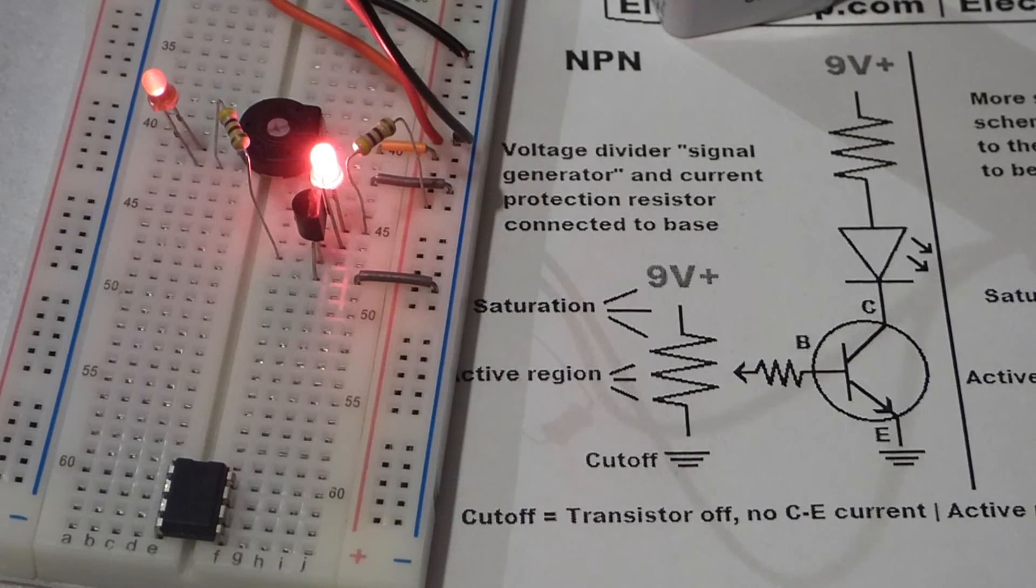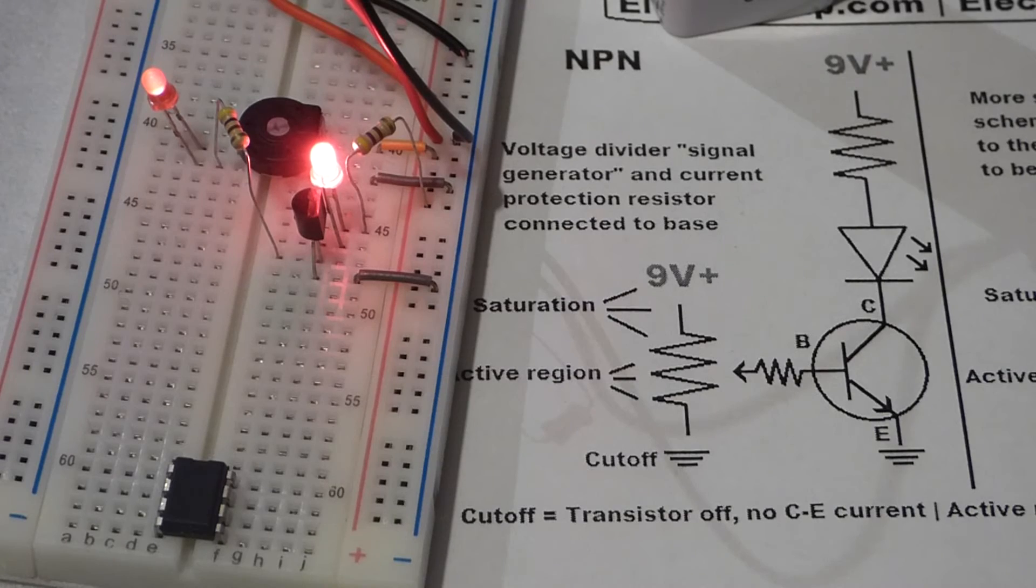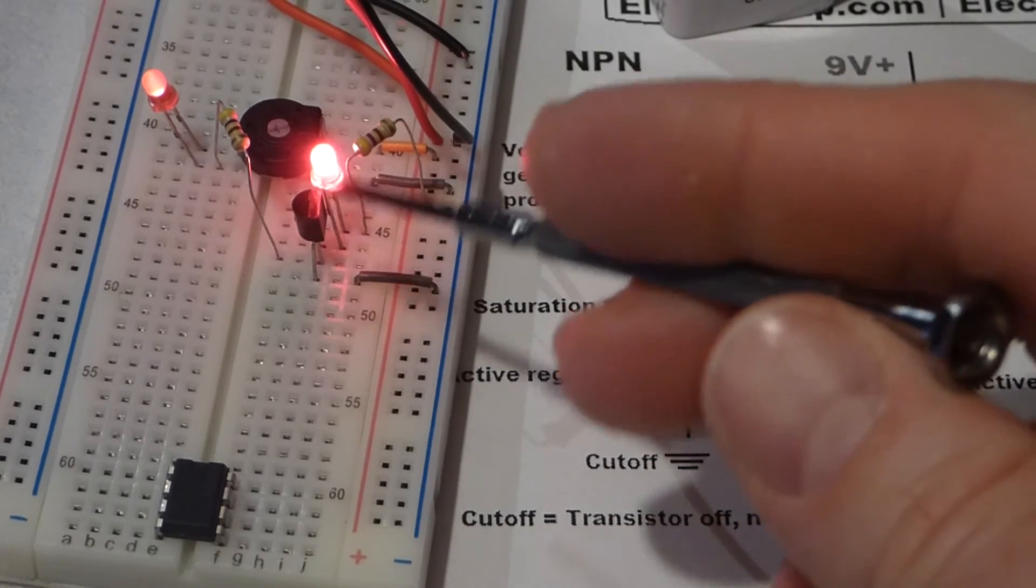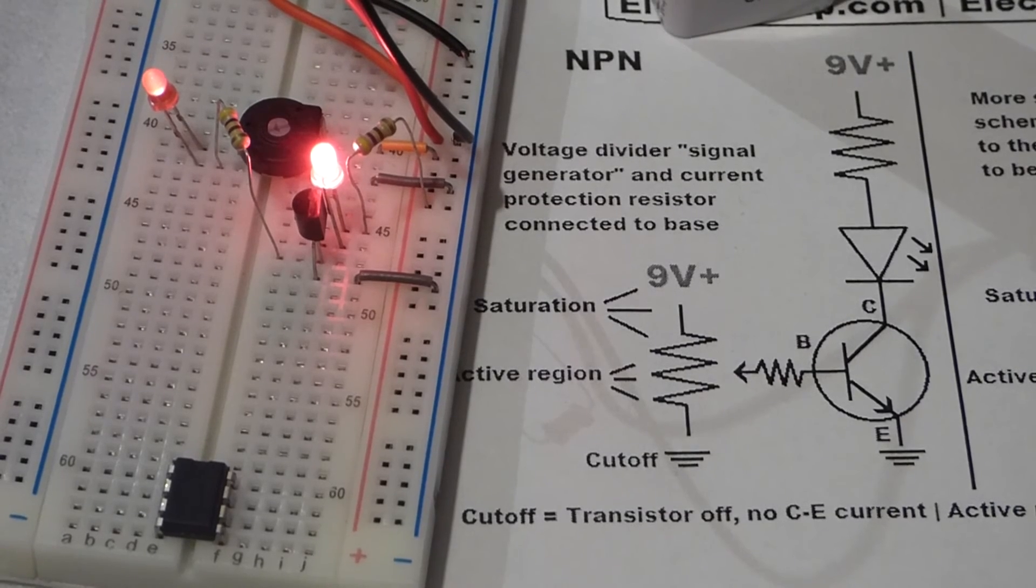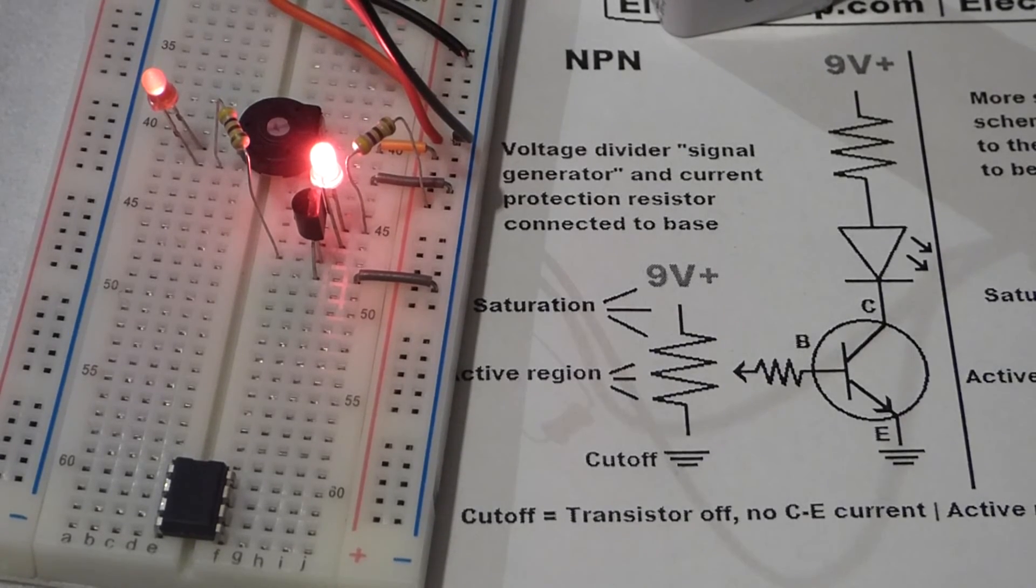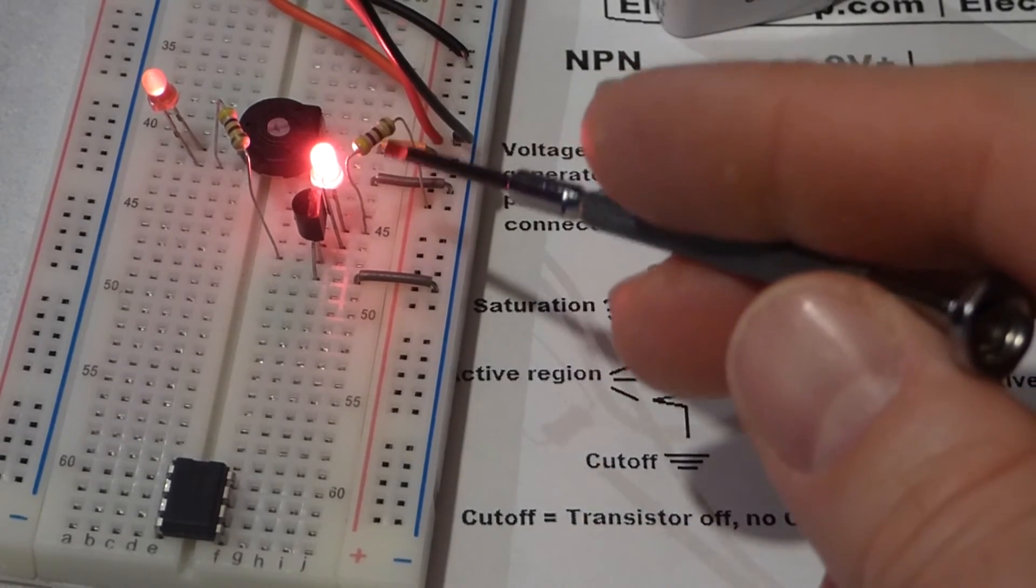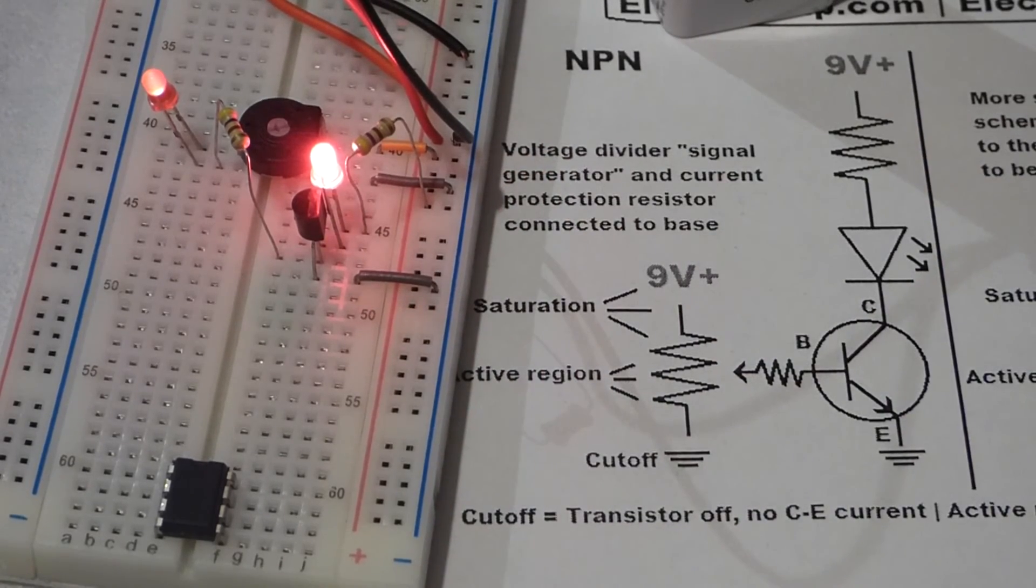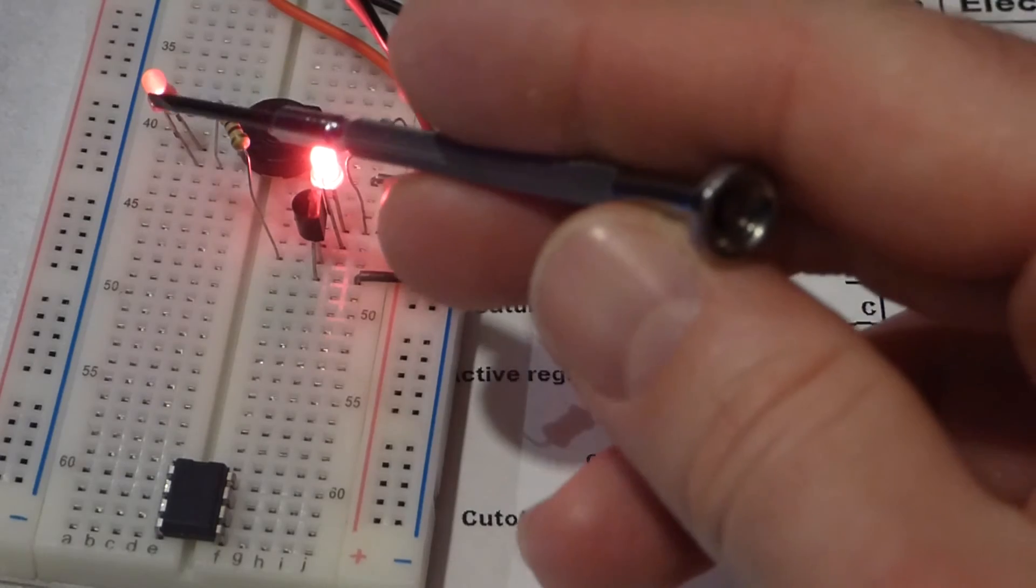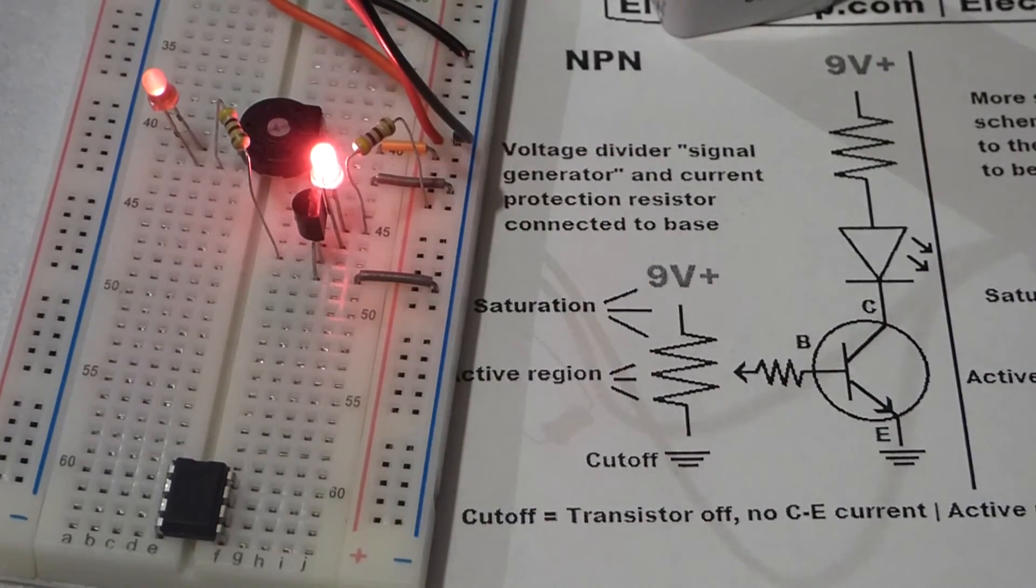We have full current going through here, through the collector to the emitter, even though we can increase current through the base. The collector-emitter current is stuck where it is because it can't go any higher. The power source is providing all that it can because of this protective resistor. The transistor is not limiting it anymore, even though we can increase the current through the base.